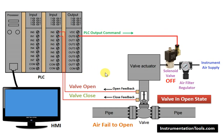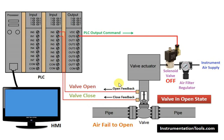First, we discuss our default condition. We have instrument air supply available here, and the SOV — solenoid valve — is in off condition, and the valve is in open state. Every on-off valve has two proximity switches: one for open state, and second for closed state. When the valve is in closed condition, the close proximity switch sends a signal to the PLC. When the valve is in open state, the open proximity switch sends a signal to the PLC.